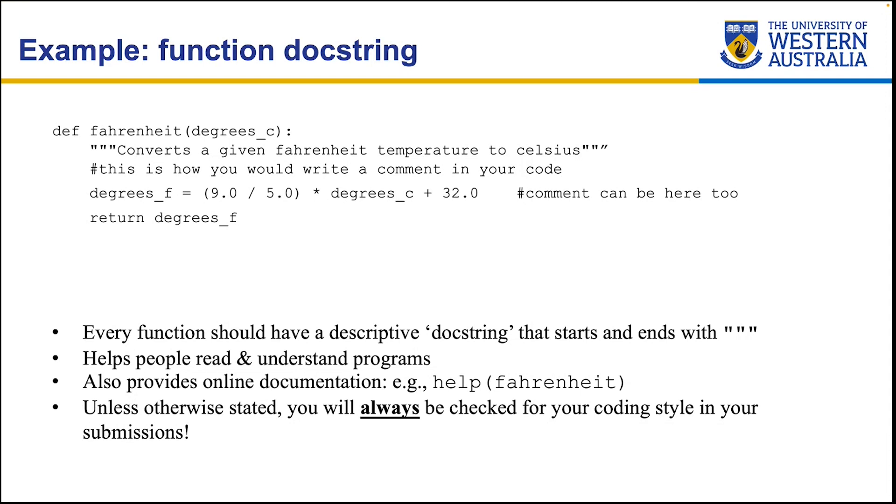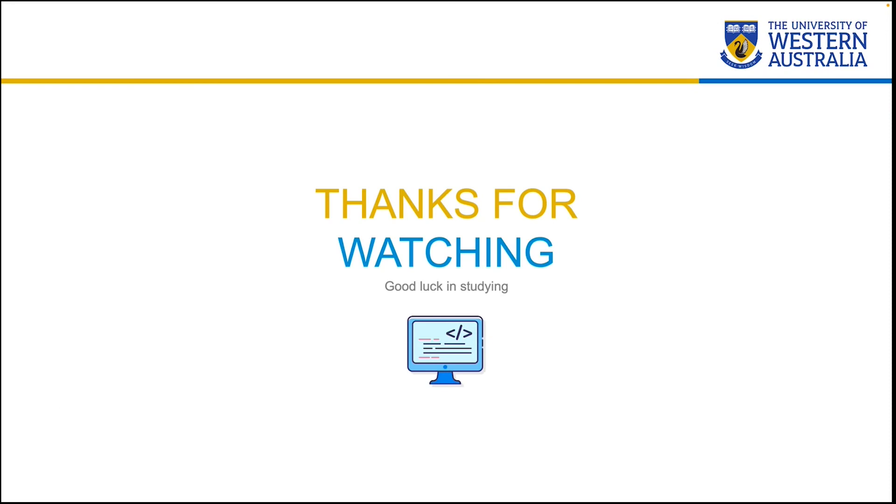So every function should have a doc string, which should be descriptive, not just like random characters. This will definitely help other people using your modules to understand what that particular function is doing or the whole module is trying to achieve. So unless otherwise stated, you will always be checked for your coding style in your submissions, which means whatever we just discussed in this particular video will be checked on the online submission system. So that's it for styles. Hopefully, you have understood better about how to write some program in a legible manner, and also explore some of the tools to help you automate that process as well. So that's it from me. I will see you in the next video. Bye!